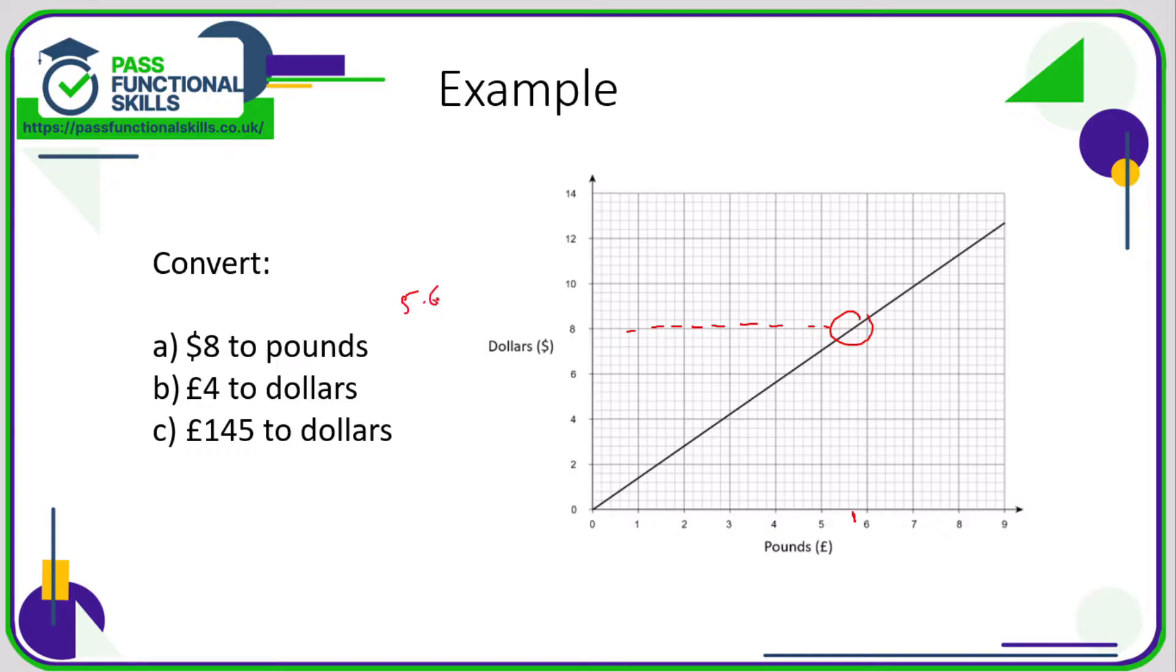So if it's between five point six and five point eight, then I think it's safe to say five point seven pounds, in other words five pounds seventy. Four pounds to dollars—well, here is four pounds.